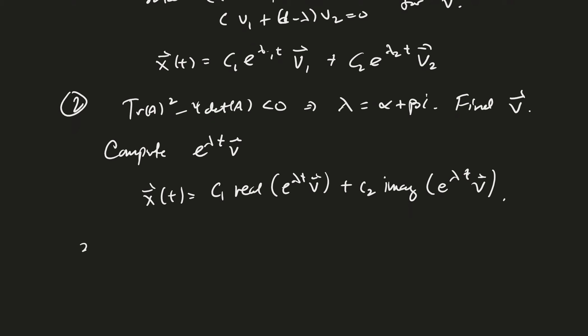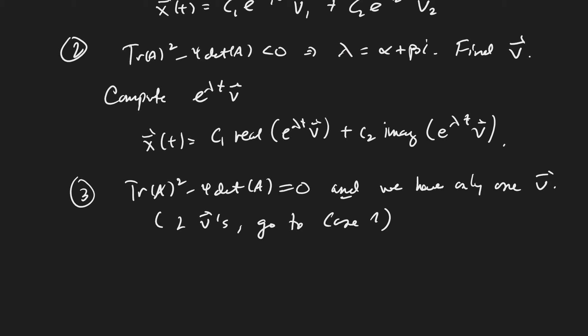And then the stuff we did today is where the trace of a squared minus 4 times the determinant of a equals 0. And we have only one v. Remember, in the case that you get two v's, that would be case 1. Go back to case 1. Say it here. Two v's. Go to case 1. But this is, like I say, this is a really rare situation.